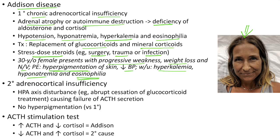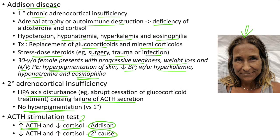Secondary adrenocortical insufficiency occurs due to HPA axis disturbance — for example, abrupt cessation of glucocorticoid treatment, which leads to failure of ACTH secretion. In secondary adrenocortical insufficiency, there is no hyperpigmentation. Regarding the ACTH stimulation test: in Addison's disease there is a defect in the adrenal gland, so ACTH will be high but cortisol will be low — even on ACTH stimulation, the cortisol will be low. In secondary cause, there is low ACTH, and on ACTH stimulation the cortisol level increases.